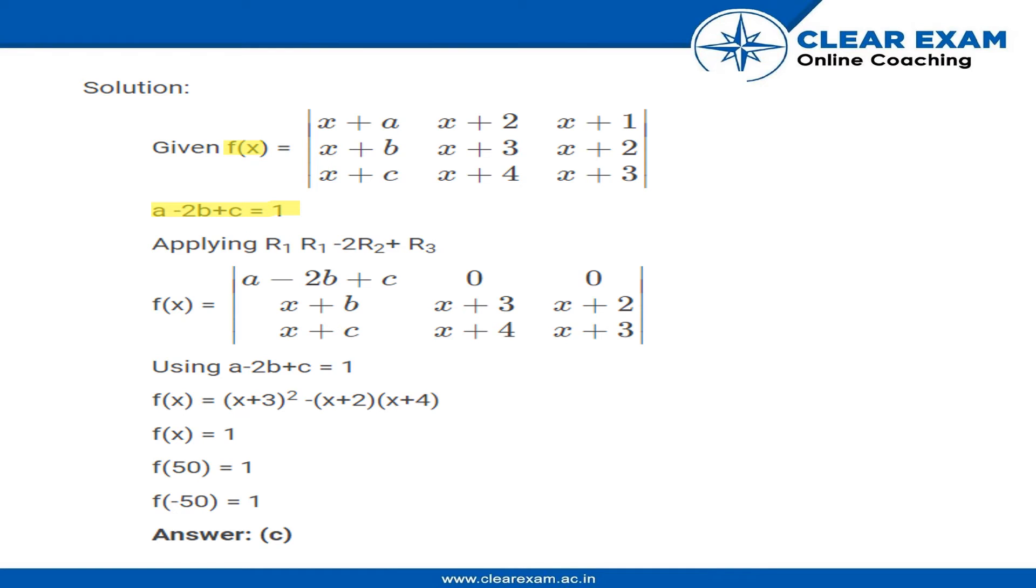We'll apply this operation R1 minus R2 minus 2R2 plus R3, and this is what we will get, this is the final result. And here we know that a minus 2b plus c is equal to 1 because that has been given to us, so the final result that we get is f(x) is equal to (x plus 3) squared minus (x plus 2) into (x plus 4).